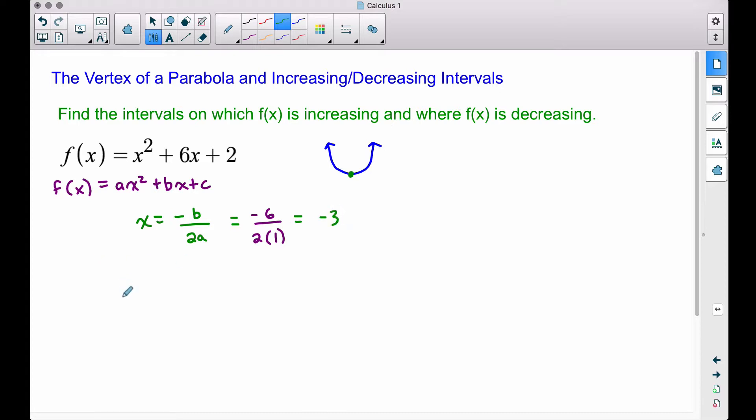Let's go ahead and take this one step further and find f(-3). Even though we're not told to find the vertex, we're going to go ahead and do it anyway. So let's plug -3 into f(x). And working all this out, we have (-3)² is 9 minus 18 is -9 plus 2 gives us -7. So our vertex is (-3, -7).